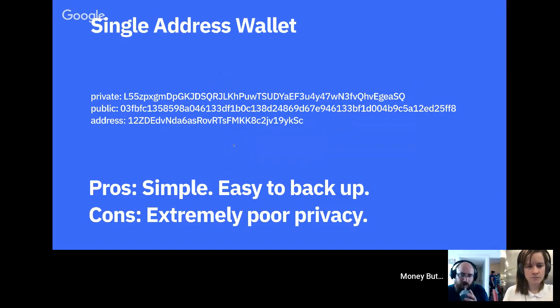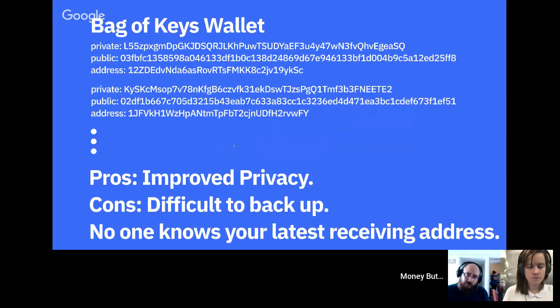But there is one giant problem with the single-address approach: you have no privacy at all. All your transactions are on the blockchain with the same address, so anybody that sends money to you now knows your address and can see all money coming in and out. It does have one good property though — it's easy to back up.